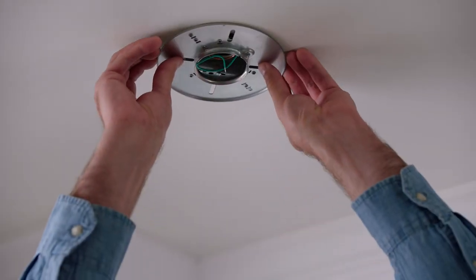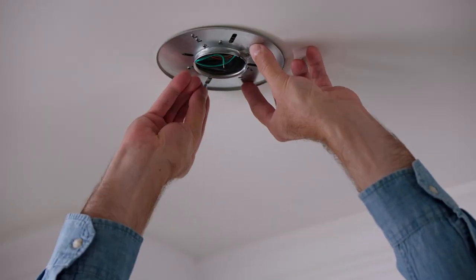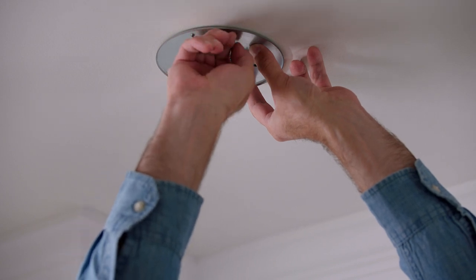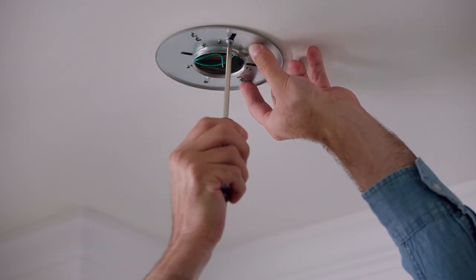Align the holes in the mounting plate with the holes in the junction box, and use the long screws to secure. Then tighten the screws until the mounting plate is flush with the ceiling.